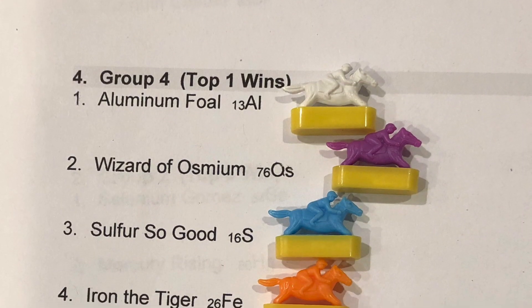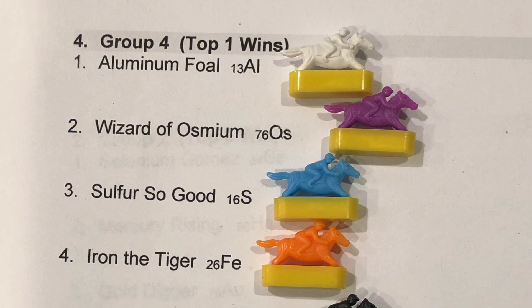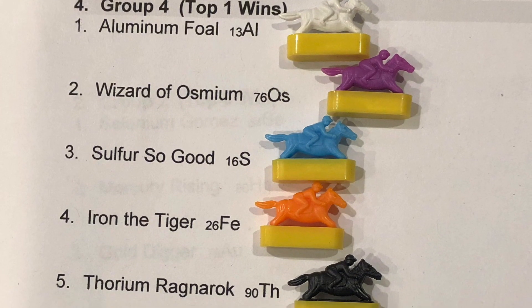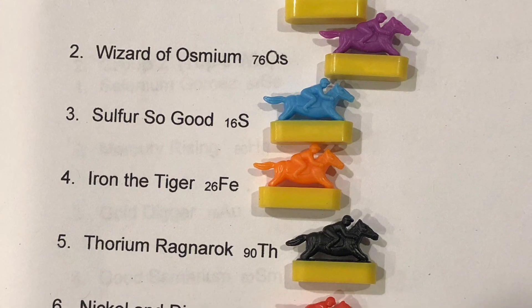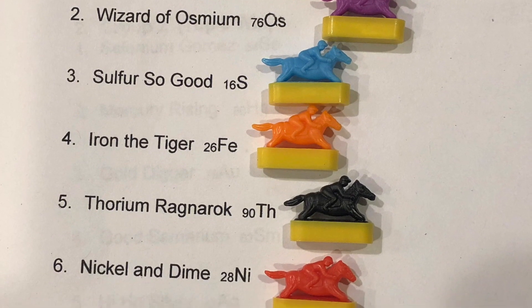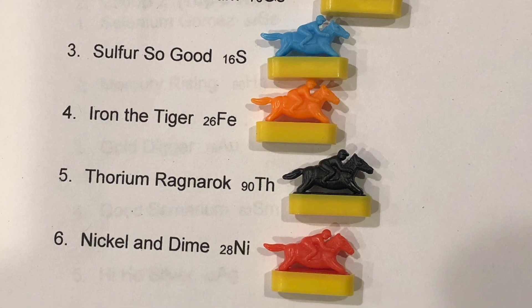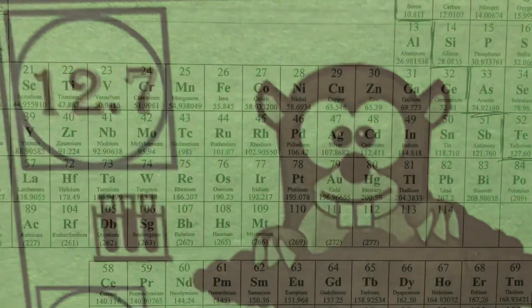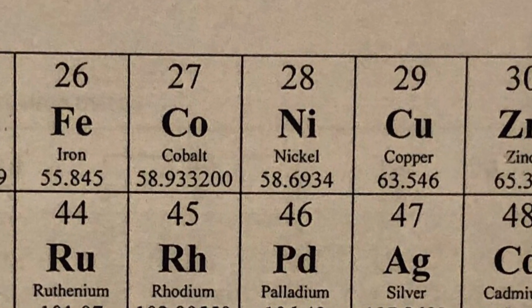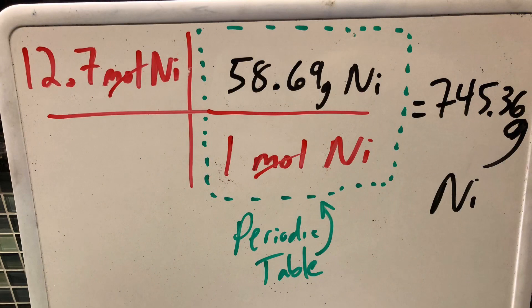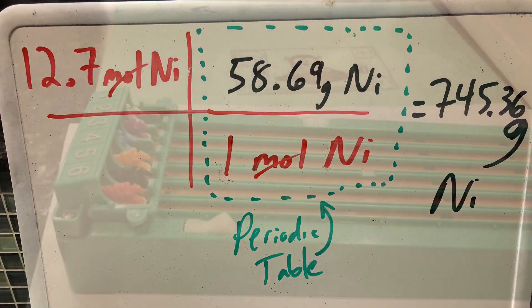For the final race, only the number one wins. In first position, Aluminum Foal, the white horse. Wizard of Osmium, the purple horse in second position. Sulfur So Good in the third position, the blue horse. Iron the Tiger, the orange horse in fourth position. Thorium Ragnarok, the fifth position, the black horse. And Nickel and Dime, the sixth horse. This time we'll be betting 12.7 mole dollars. Let's say I want to put that on Nickel and Dime: 12.7 moles times 58.69 grams of nickel per mole would win 745.36 gram dollars should Nickel and Dime come in the top spot.